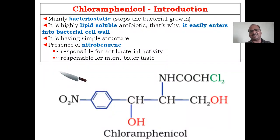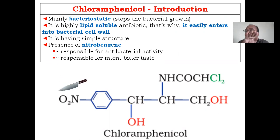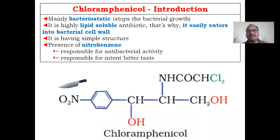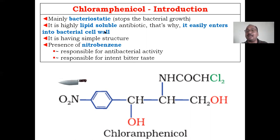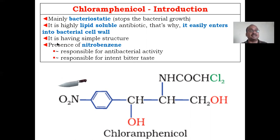Chloramphenicol is bacteriostatic in nature. Bacteriostatic means it stops the growth of the microorganism — it does not kill; it stops growth. Keep that in mind, it is a very important point. Chloramphenicol is bacteriostatic. It is highly lipid soluble, which is why it easily enters into the bacterial cell wall, since cell walls are made up of lipids. It has a very simple structure which you need to know for the examination.